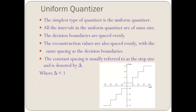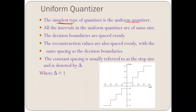Let's see what uniform quantizers are. Quantization is a process, and a quantizer is the device or system with the help of which we carry out that process. Uniform quantization is the simplest type of quantizer.